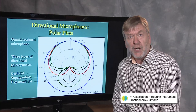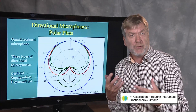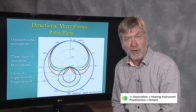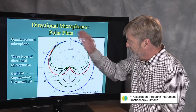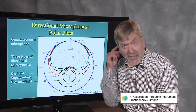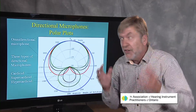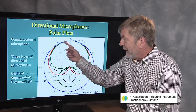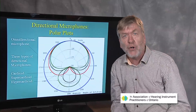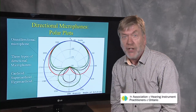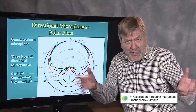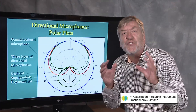Directional microphones are often displayed — what they do, what their function is — in terms of polar plots. It has nothing to do with the North or South Pole. Consider this someone's head. The zero would be the person's nose, the 180 is the back of her head, and the 270 and the 90 are the ears. Microphones that are equally sensitive to sounds in all directions are called omni-directional microphones. Most microphones, by default, are omni-directional — they pick up sound equally in all directions.